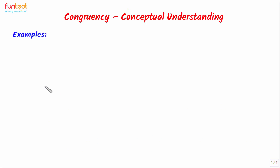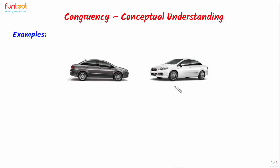Let's look at some examples of congruent objects. Here we have two Fiat Lineas — two cars from the same company and same model, so we can understand that their size and shape will be the same. So are they congruent? Yes, they are congruent because they have the same size and shape. But are they identical? No, they are not identical. We can see that one car is black in color and the other one is white in color, so how can they be identical?